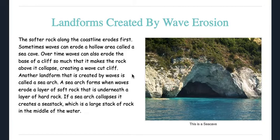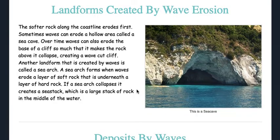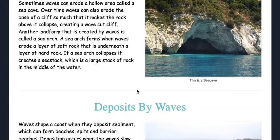Another landform created by waves is called a sea arch. A sea arch forms when waves erode a layer of soft rock that is underneath a layer of hard rock. If a sea arch collapses, it creates a sea stack, which is a large stack of rock in the middle of the water.